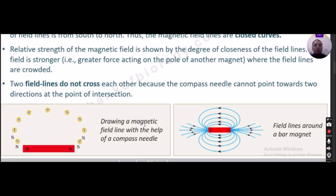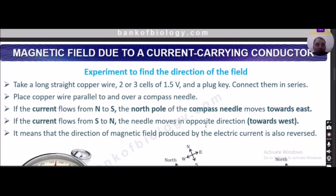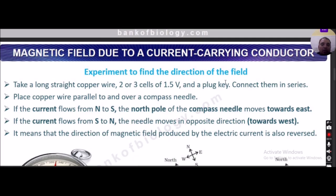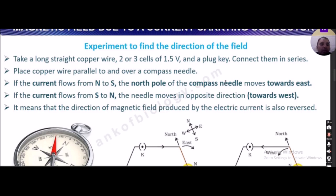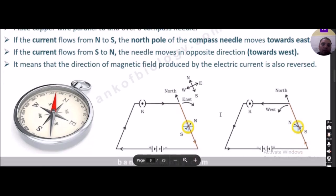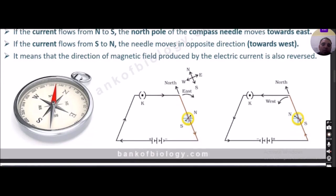Now we will deal with magnetic field due to a current-carrying conductor. We need a long straight copper wire, two or three cells of 1.5 V, a plug key — all connected in series. Place the copper wire parallel to and over a compass needle. A figure has been shown where the compass needle is below the copper wire.